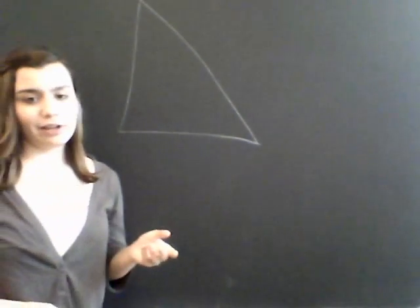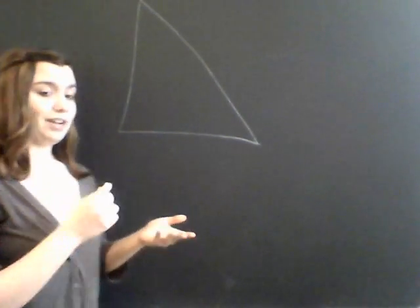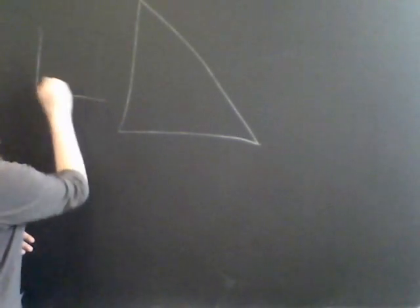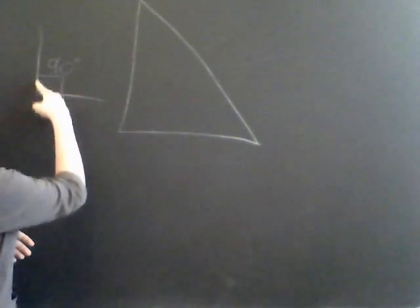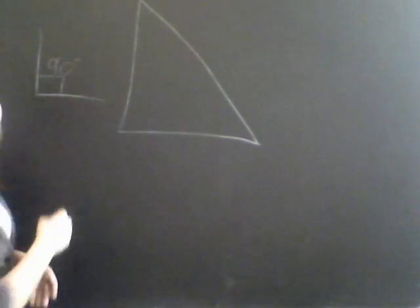A triangle can only have one right angle because a right angle in itself, the definition of a right angle, is an angle which is 90 degrees. A 90 degree angle looks like this, it makes a perfect square like so.